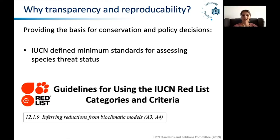For example, the IUCN — the International Union for the Conservation of Nature — defined a minimum set of standards for assessing species threat status under climate change. You can read this in the Red List guidelines, for example in section 12.19 on inferring reductions from bioclimatic models.